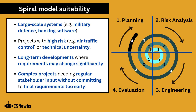The spiral model is suitable for large-scale systems, such as military defense or banking software. It's also good for projects with high risk, such as air traffic control or technical uncertainty. It's suitable for long-term developments where requirements may change significantly, and complex projects needing regular stakeholder input without committing to final requirements too early.